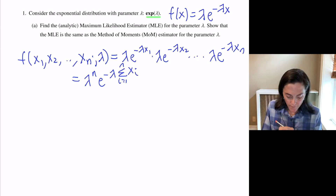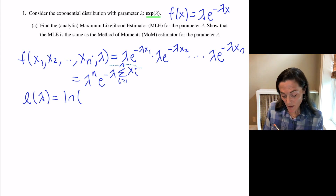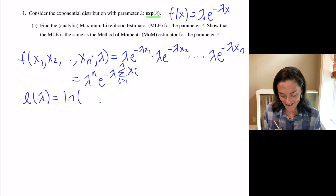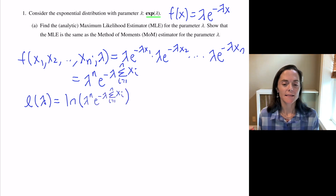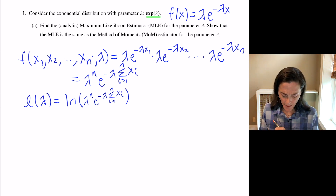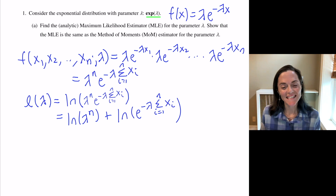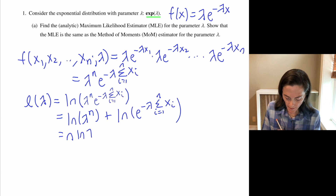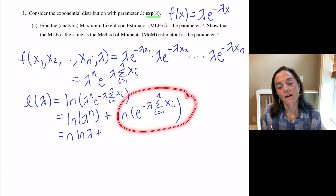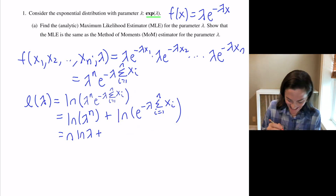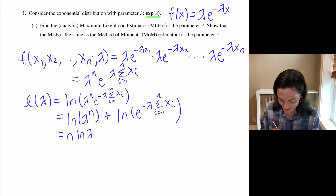Let's work with the log likelihood function. The log likelihood l(λ) — we take the natural log of this and use properties of logarithms to simplify, then work to maximize it. The first term involves a product, so this becomes ln(λⁿ) plus the natural log of e to the minus lambda times the sum from i equals 1 to n of xi. Simplifying: the first term is n·ln(λ), and then ln of e to the something is just that something, so we get minus λ times the sum from i equals 1 to n of xi.